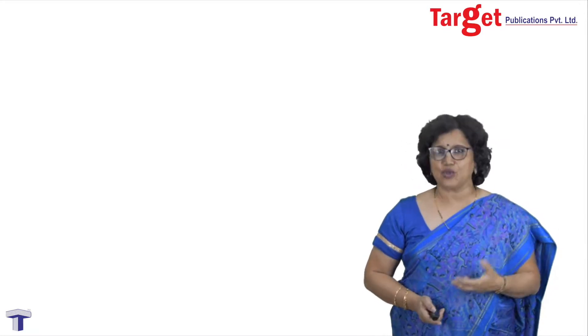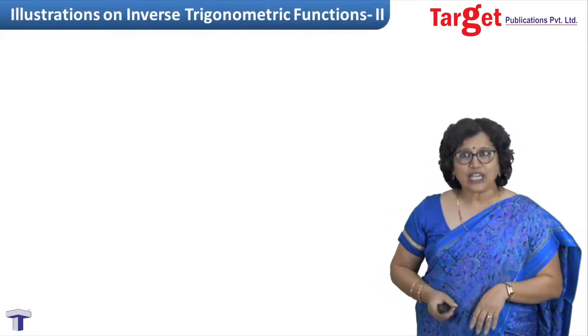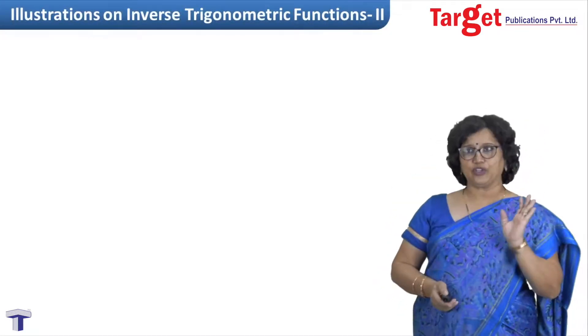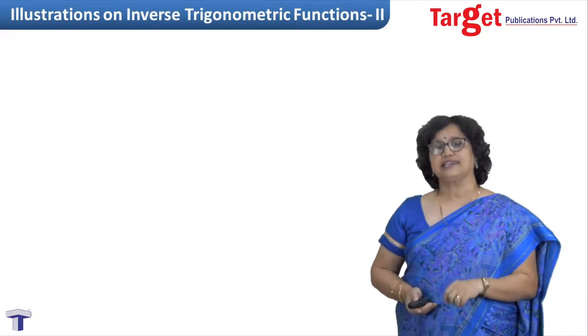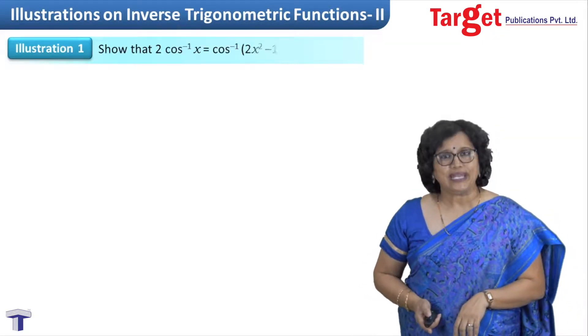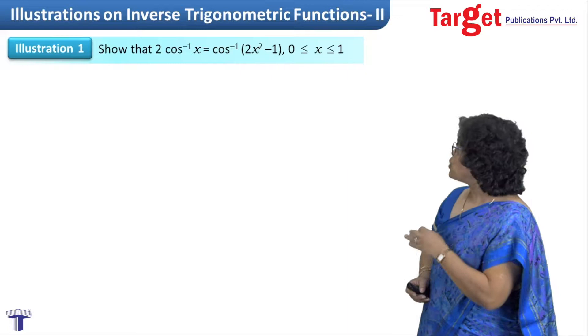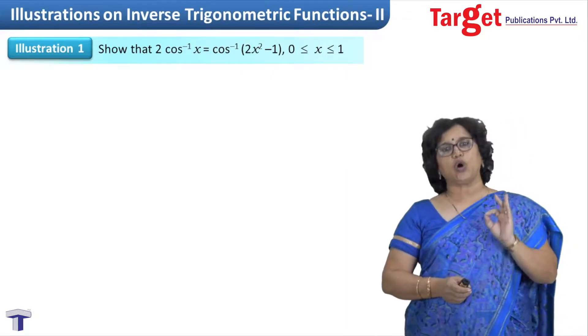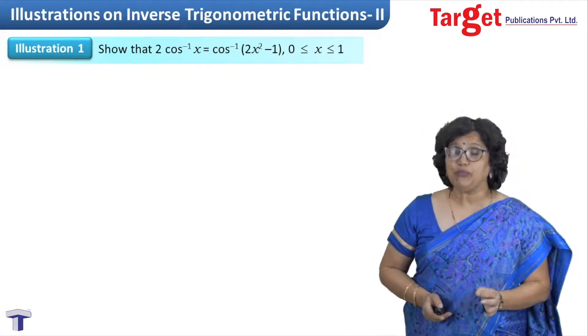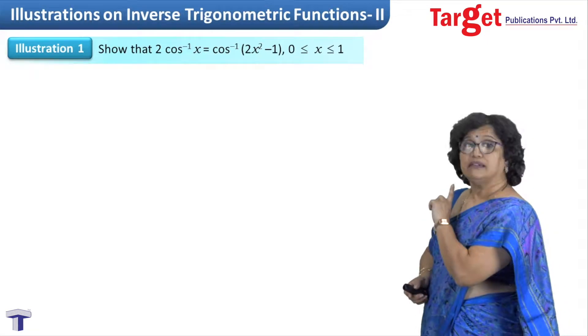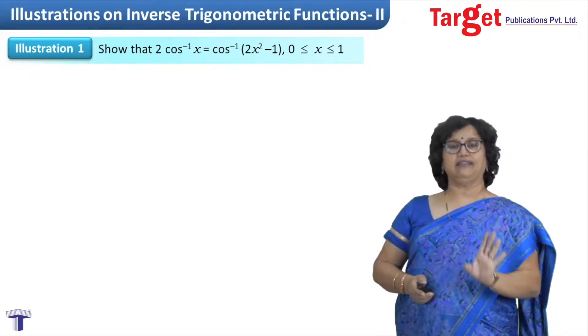Hello everyone. In my last session I started with some illustrations on inverse trigonometric functions, and one session is not sufficient, so in this session also we will be taking more illustrations on inverse trigonometric functions. This is our second session. The first problem is that we have to show 2cos⁻¹x = cos⁻¹(2x²-1), provided x lies in [0, 1].